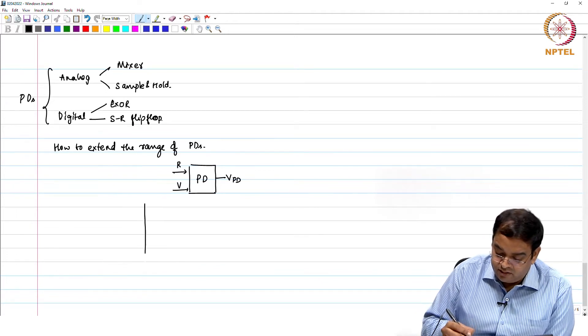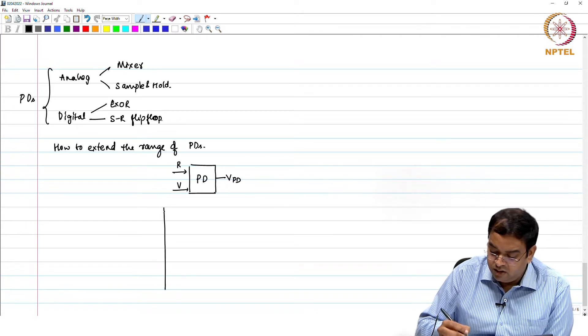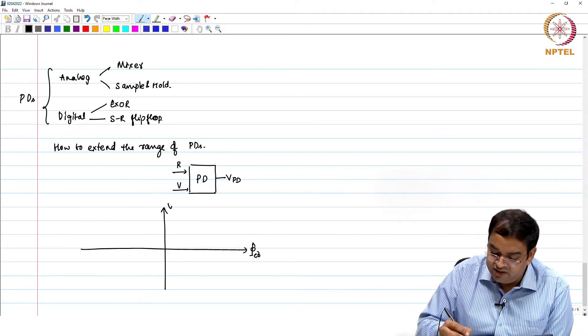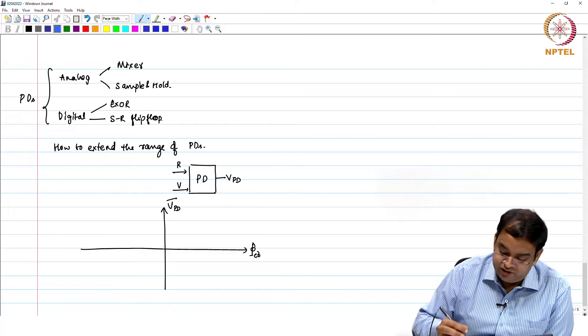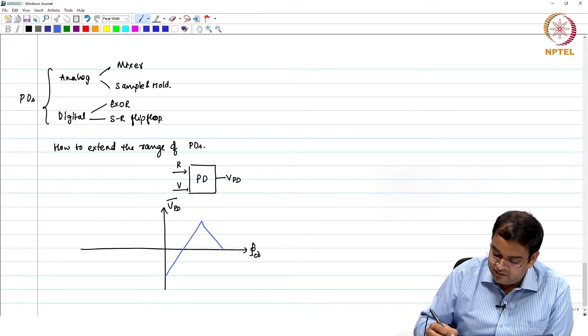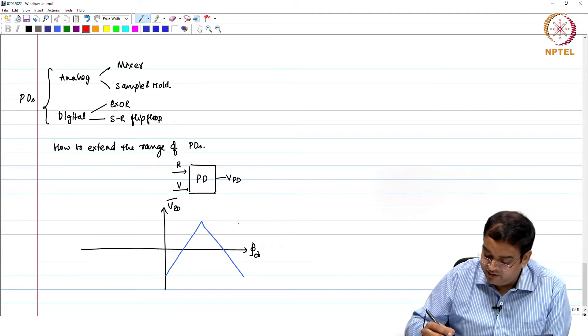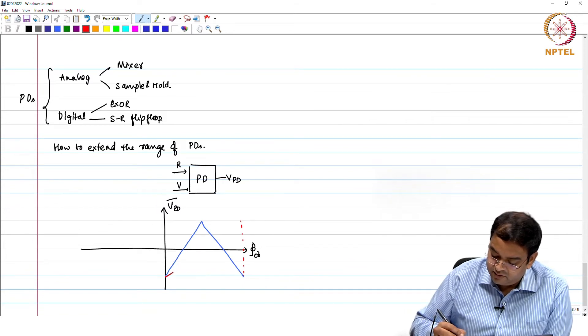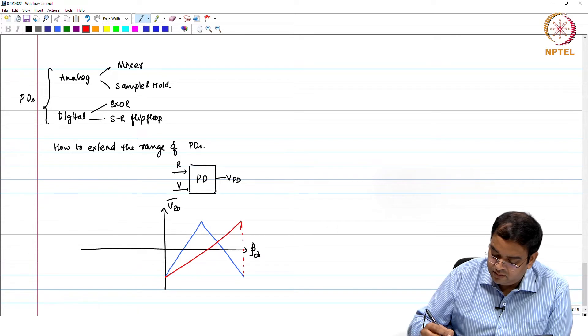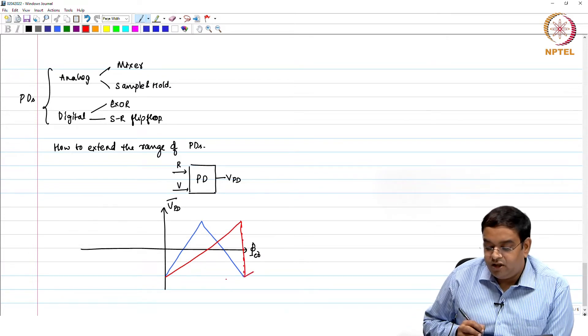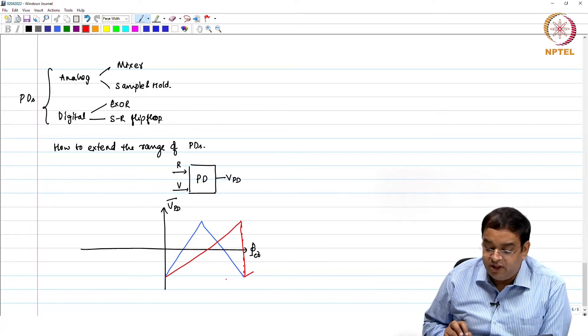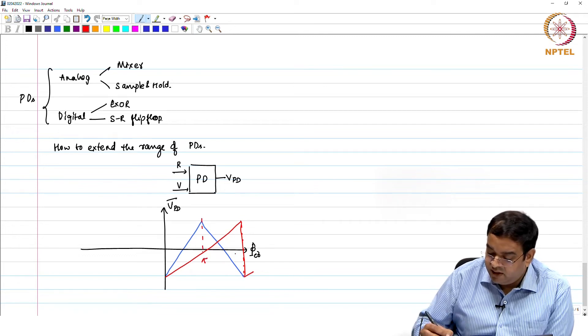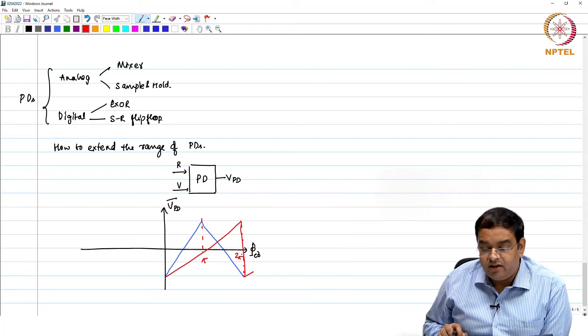So here, just to recall what you have seen earlier, is that with respect to the phase error between the R and V signal, your Vpd average was either like this—that was your XOR case—or it was like this. On the positive side, on the negative side you will follow the similar characteristics. So this linear range, this is π, and by the way this is 2π. It does not extend more than that, right.